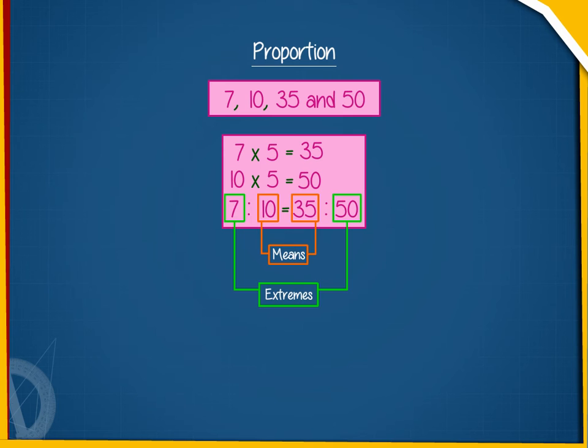The important quality of proportion is that product of extremes is equal to product of the means. Here, 7 into 50 is equal to 35 into 10, equal to 350. Hence, these numbers are in proportion.